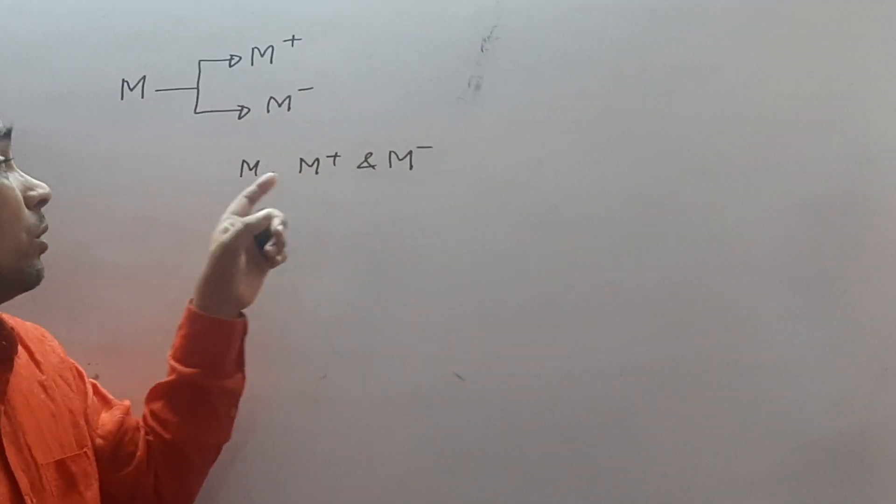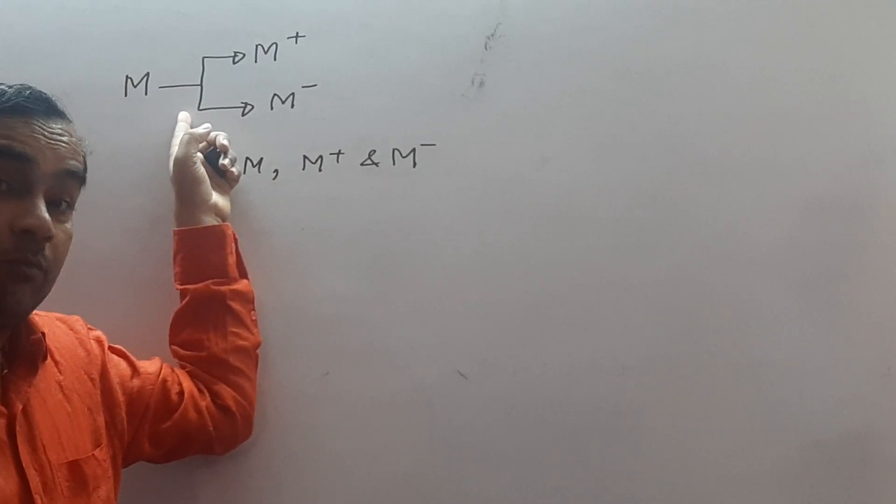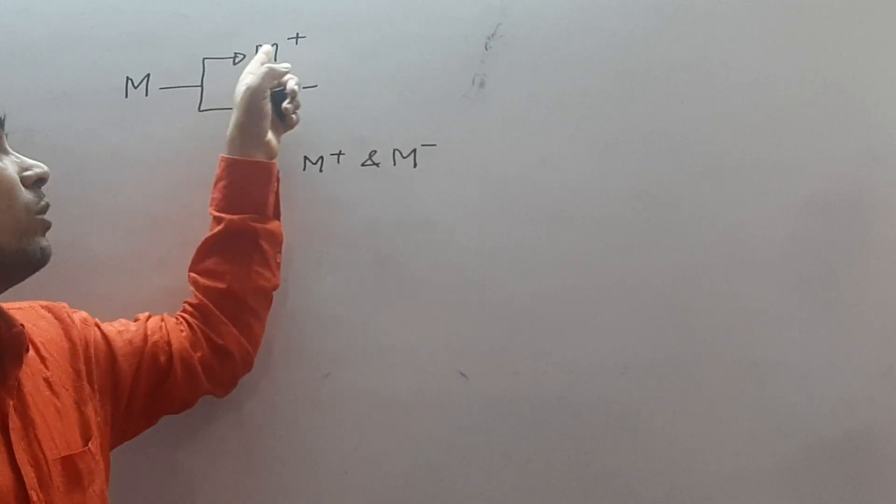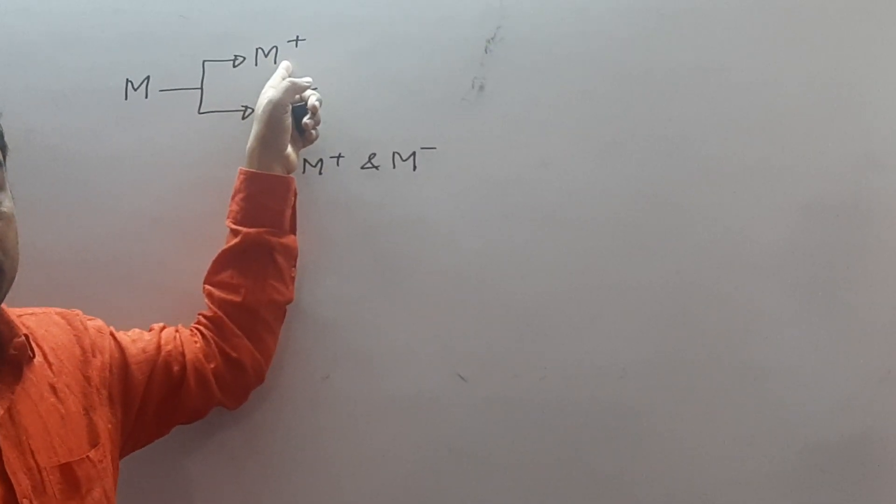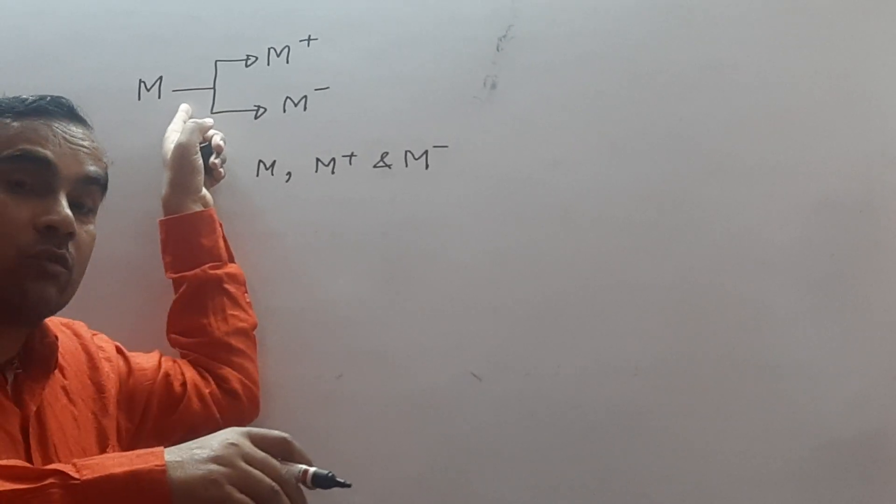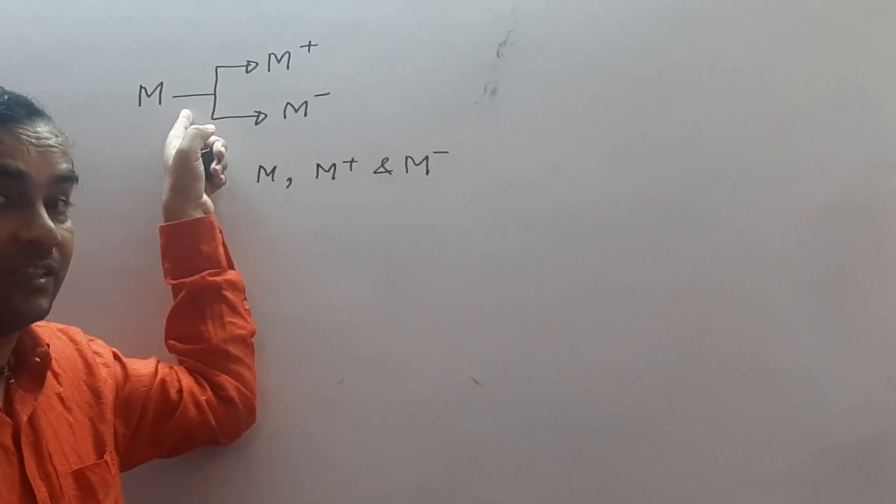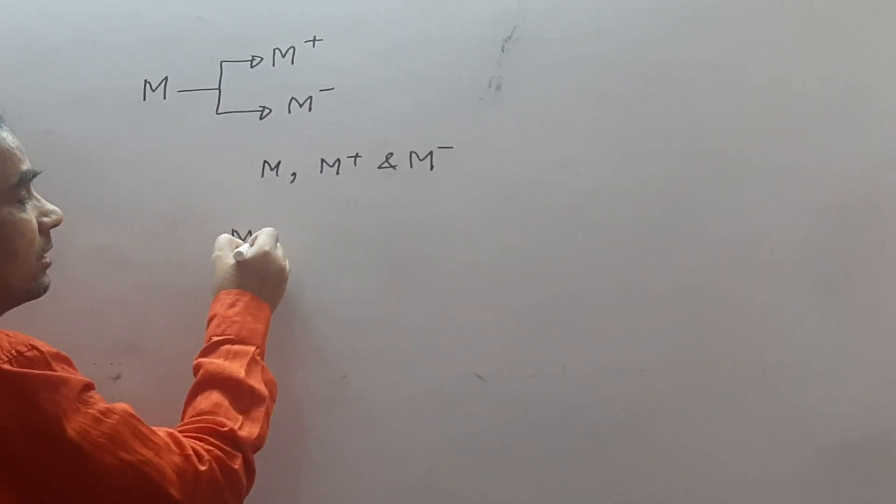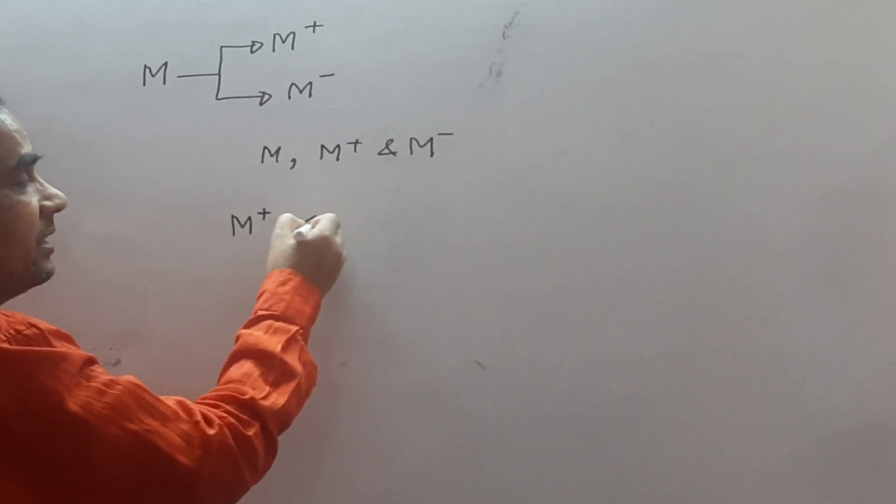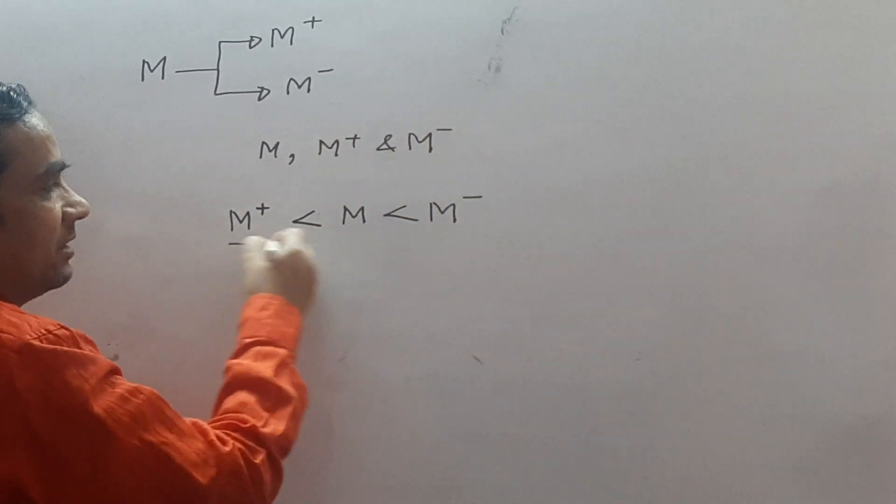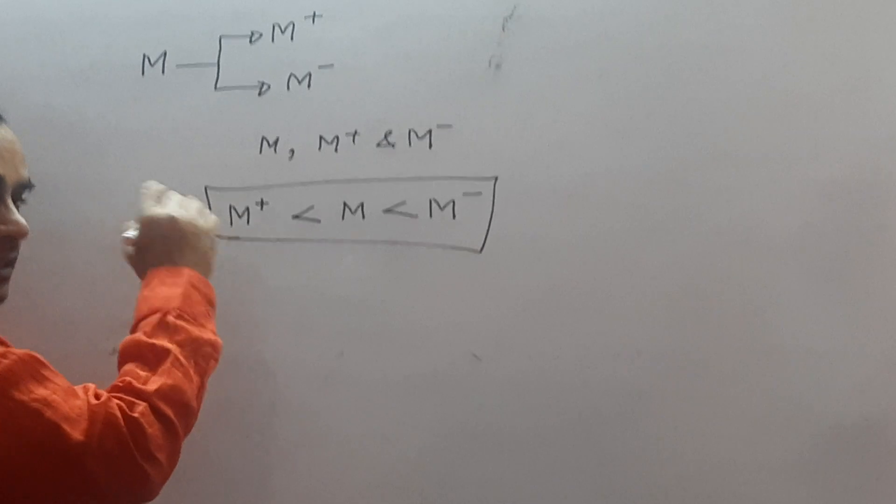Now, from object M, when some electrons are removed, then it acquires positive charge. So its mass decreases. When M is given some electrons, then its mass increases. So, ascending order of mass is M plus is less than M is less than M minus. It is your answer.